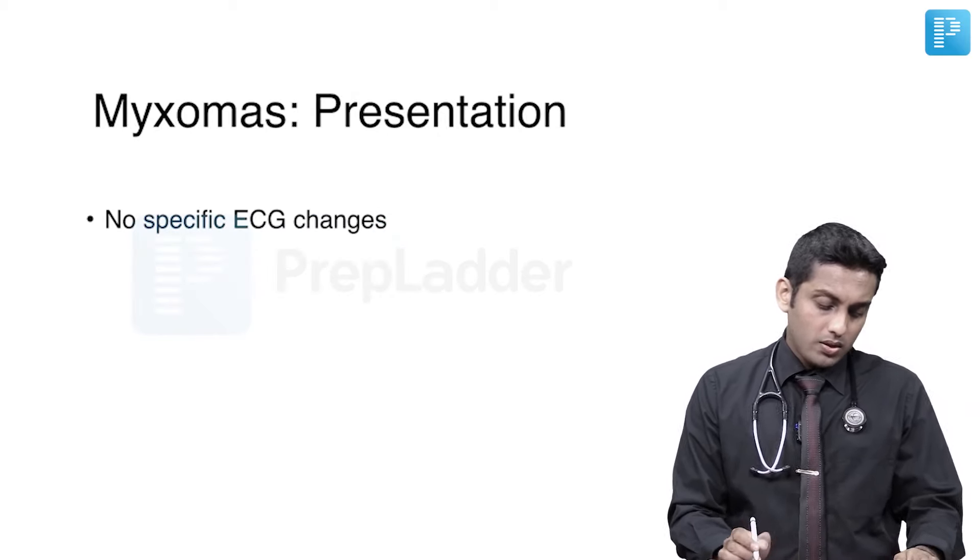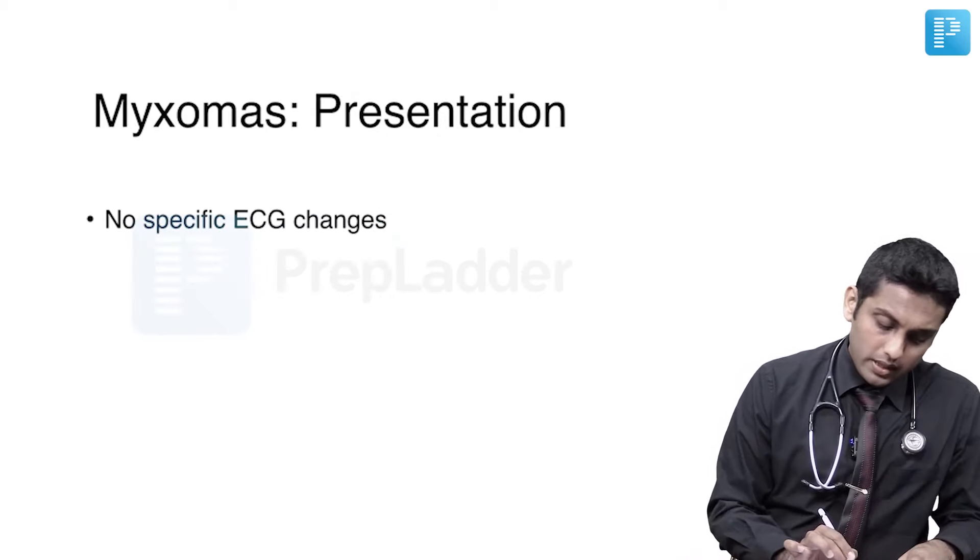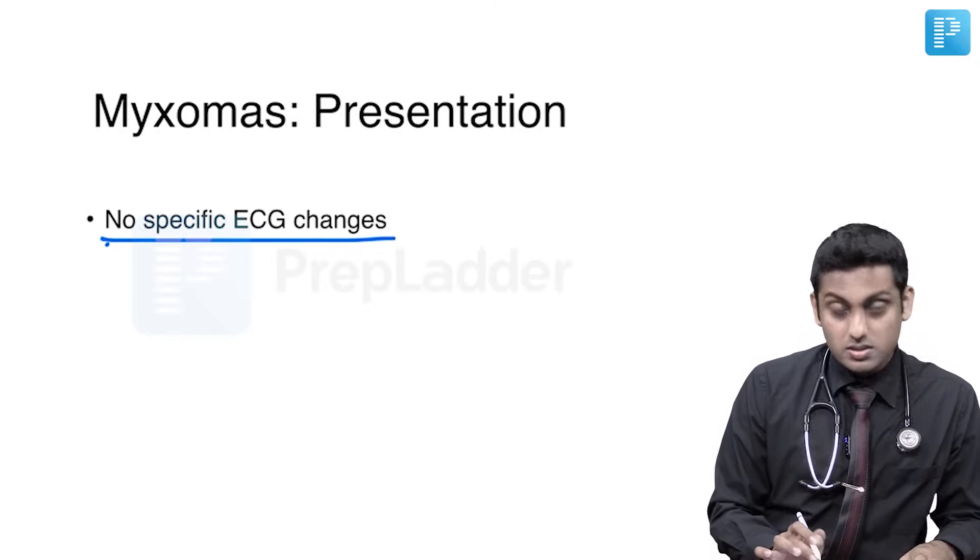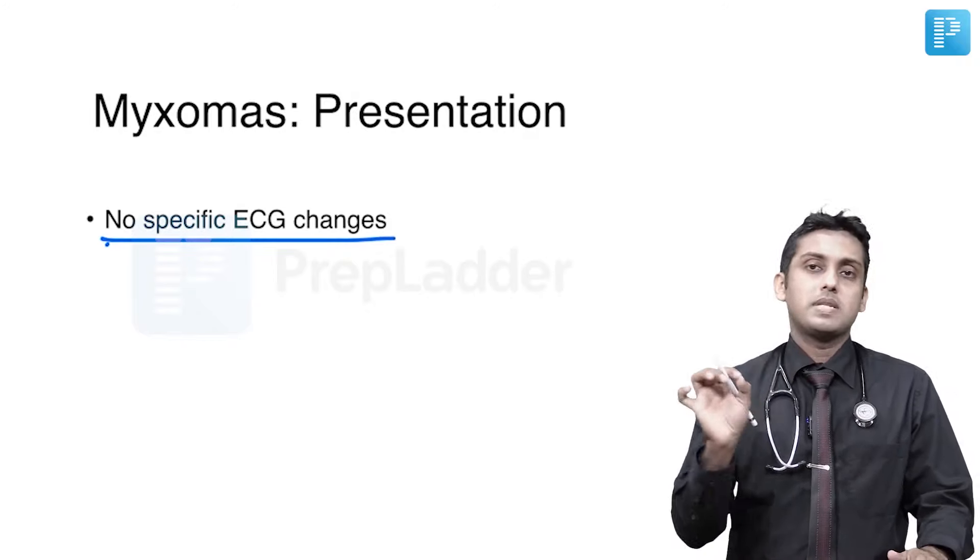When it comes to the ECG, there are no specific ECG changes — an absolutely normal ECG is possible. Sometimes if there is significant left atrial enlargement, changes in the P wave can be observed. If there are co-existing pathologies in the heart, those signs could be seen on the ECG, but per se ECG can actually be normal.